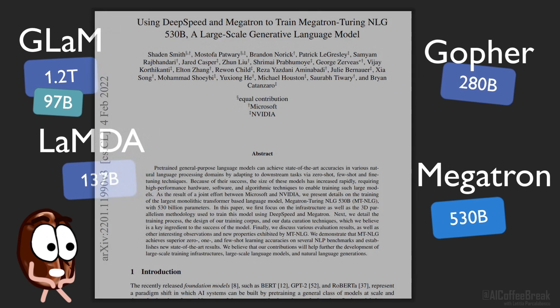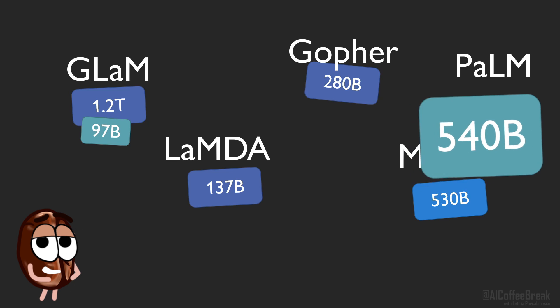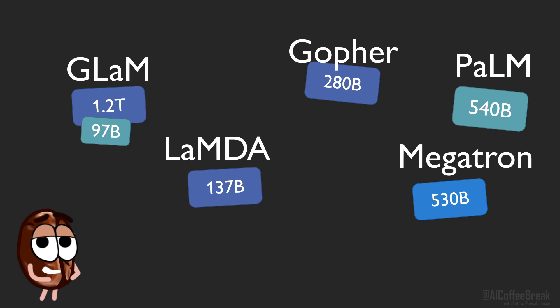Okay, and of course Google needed to claim the biggest model again, so they made PaLM just a bit bigger — just enough to overshadow Megatron by 10 billion parameters. So they made a 540 billion parameter model, and keep in mind that this is a dense model: all parameters are used during inference, there is no sparsity here.